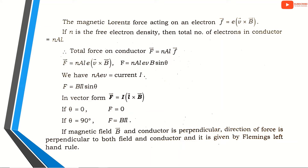If N is the free electron density, the total number of electrons in the conductor is equal to N times A times L, where N is the electron density per unit volume.